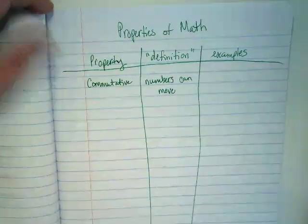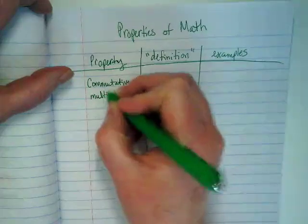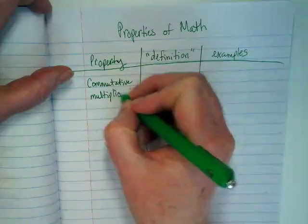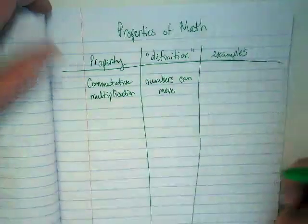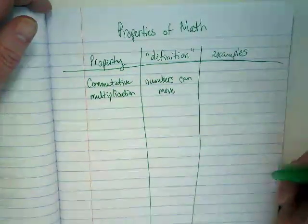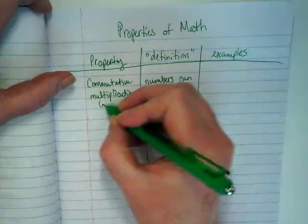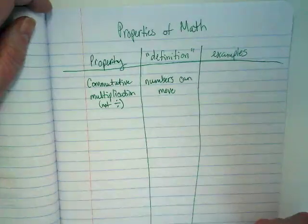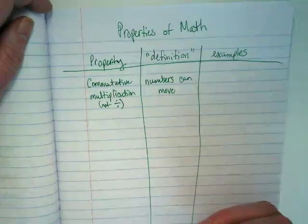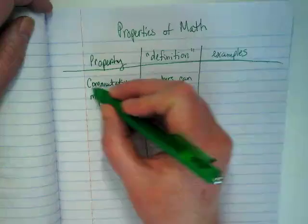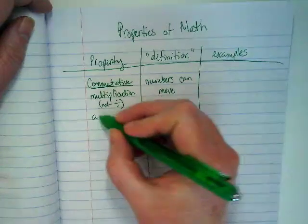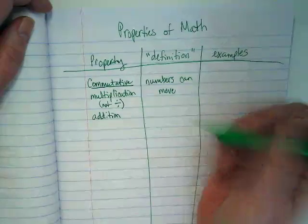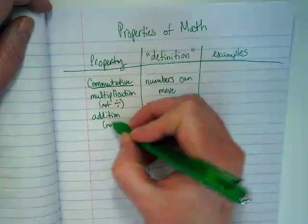We know it works with multiplication. The example we used the other day was multiplication, but it does not work with division. What else does this work with? It works with addition. And what is the inverse of addition? It does not work with subtraction.